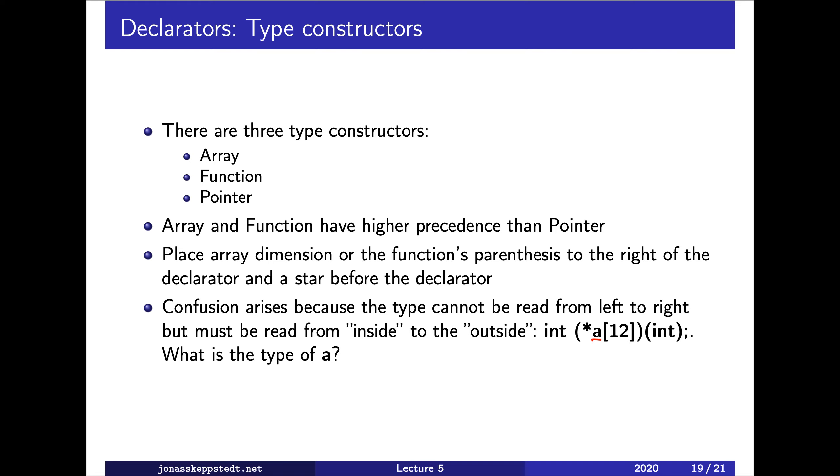So how can we interpret this? Well, we start with A and look to the right. Then we find an array, so A is an array. Then we have concluded that and continue looking to the right. We look for either a left bracket or a left parenthesis, but we can't find it. We find instead a right parenthesis. So we ignore that and go to the left instead. There we find a pointer. So A is an array of pointers.